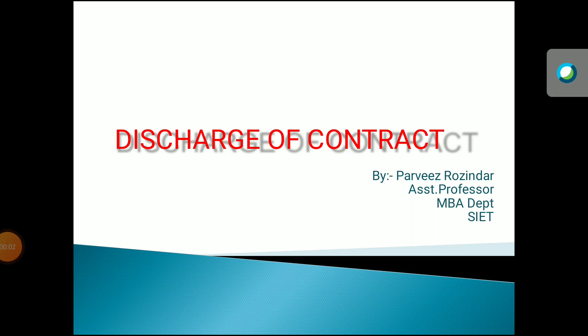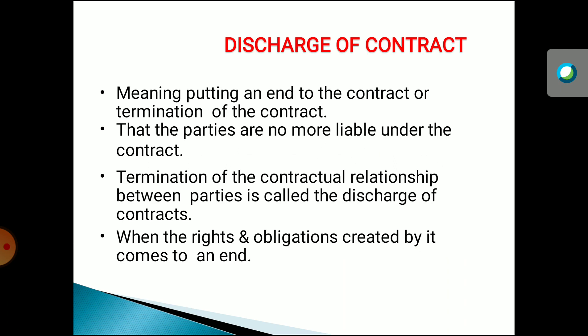We started discharge of contract. Discharge of a contract means putting an end to a contract, where both the parties are free from performing their part of obligation — they don't have to perform their obligation and will not get any duties or rights in return. This means putting an end to or termination of the contract, where the parties are no more liable under the contract.